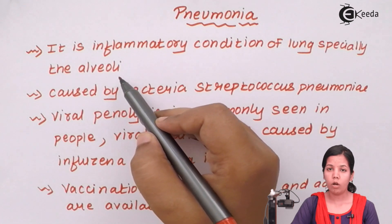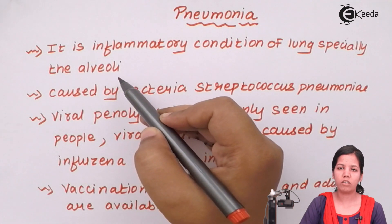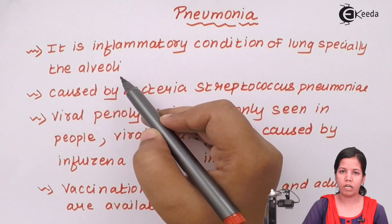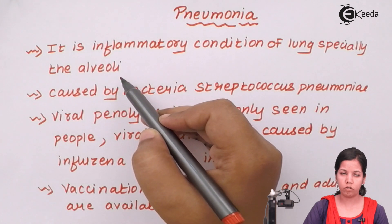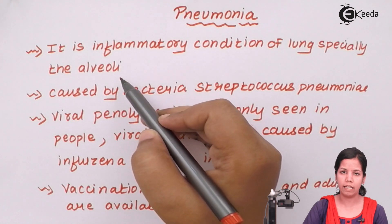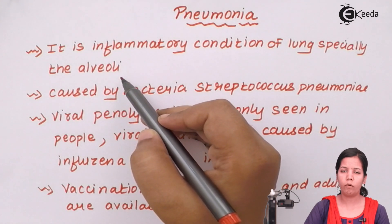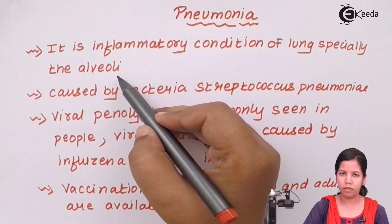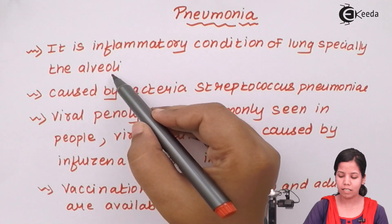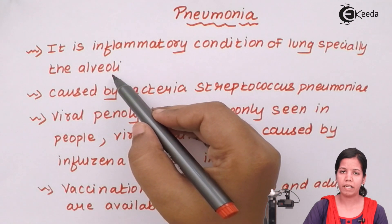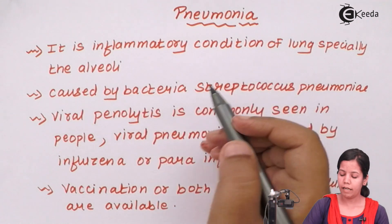The last part of the respiratory tract — the balloon-like alveolar structures, which allow the intake of oxygen into the cells and removal of carbon dioxide — becomes congested or filled with white secretions, making breathing difficult.